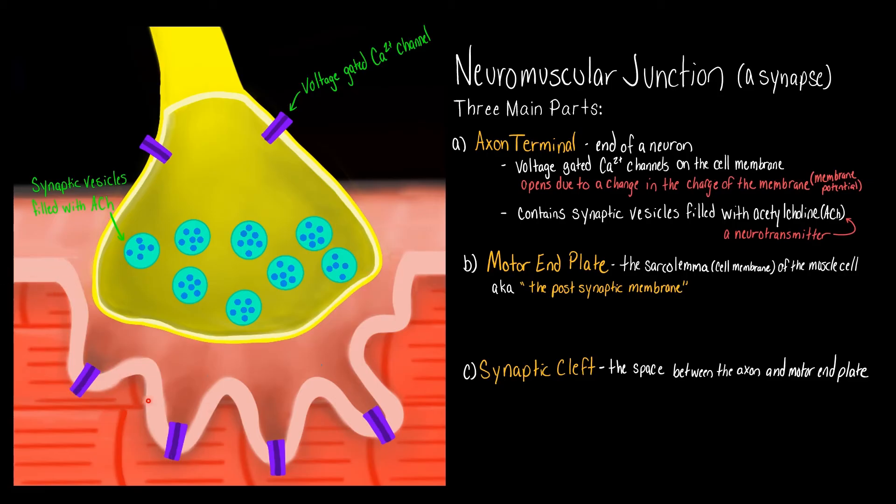On the motor end plate you can see we have other channels, but these are not voltage-gated channels, these are called ligand-gated channels. Ligand-gated channels are a type of chemically gated channel, so ligand-gated means specifically it's either going to be a neurotransmitter or a hormone that opens the channel. In this case the neurotransmitter acetylcholine is going to bind to this channel to make it open. And then in the synaptic cleft we have acetylcholinesterase. Whenever you see -ase at the end of the word it is an enzyme, and in this case this is an enzyme that is going to break down acetylcholine.